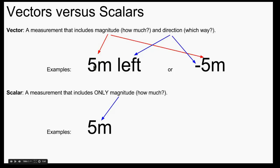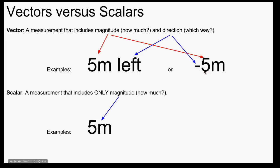A vector is something that has magnitude and direction. So when we say something is 5 meters left, we are using a vector by giving a magnitude — how much, 5 meters — and saying the direction as left. We can also give a direction as a negative sign; if it's to the left, we would say it's negative, so negative 5 meters means 5 meters to the left. A scalar is any physical measurement that only has magnitude — it tells us how much, but not what direction.